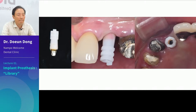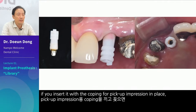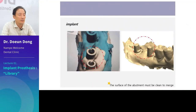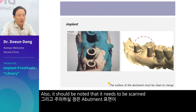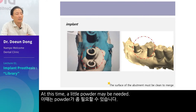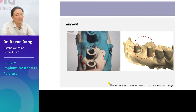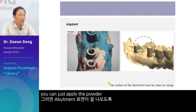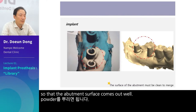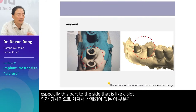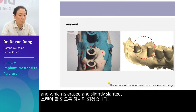This is just an idea. If you insert it with the coping for pickup impression in place, you can use it conveniently. It should also be noted that it needs to be scanned so that the surface of the abutment is well exposed. A little powder may be needed — the stock abutment is shiny, so it may not be scanned well. You can apply powder so that the abutment surface comes out well. Just make sure that it is scanned well, especially the slot-like, slightly slanted part on the side.